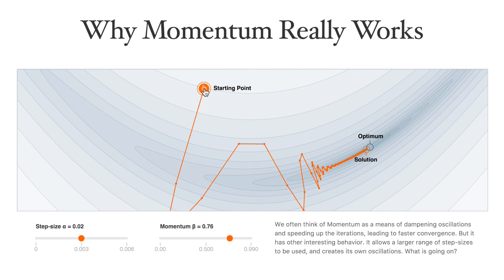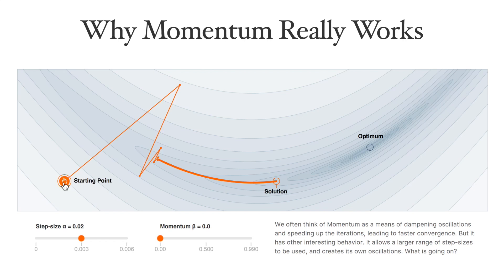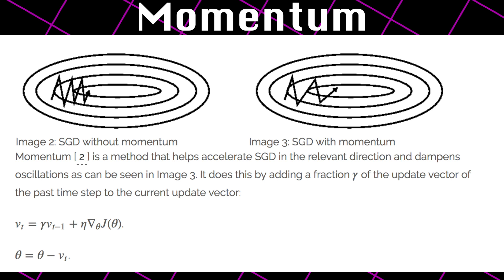The oscillations in plain old SGD make it hard to reach convergence though, so a technique called momentum was invented that lets it navigate along the relevant directions and softens the oscillations in the irrelevant directions. All it does is it adds a fraction of the direction or update vector of the previous step to the current step, which amplifies the speed in the correct direction. So it's just like momentum from classical physics.